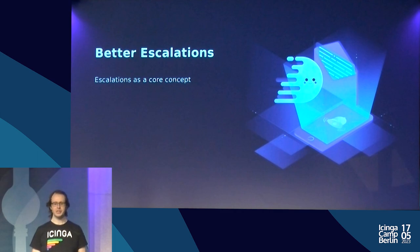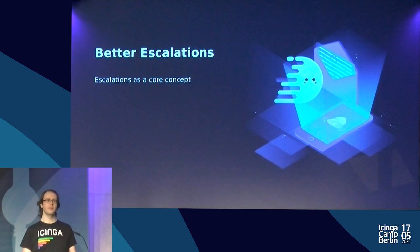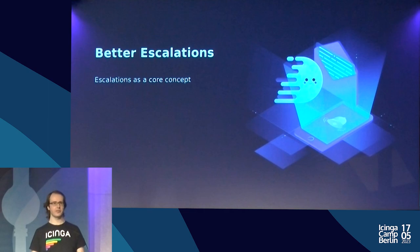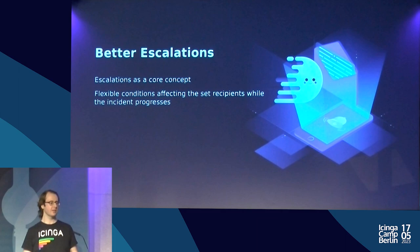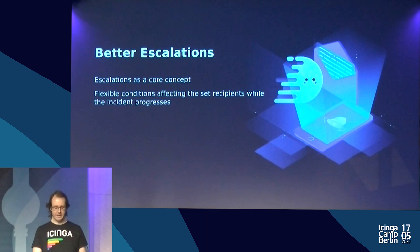The next thing we're trying to improve is escalations. In Icinga 2, you can say send a notification to some person if the problem is older than an hour, or only if it's critical, but this is just a condition checked each time a notification is sent. There's no entity in the config that says 'this is an escalation.' We are trying to change this — we want a proper escalation entity with flexible conditions specifying when it will trigger.